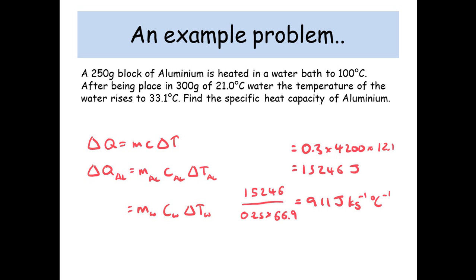Now, we need to divide by the mass of the metal and the change in temperature of the metal. So the metal block, the aluminum, had a mass of 250 grams, which is 0.25 kilograms.